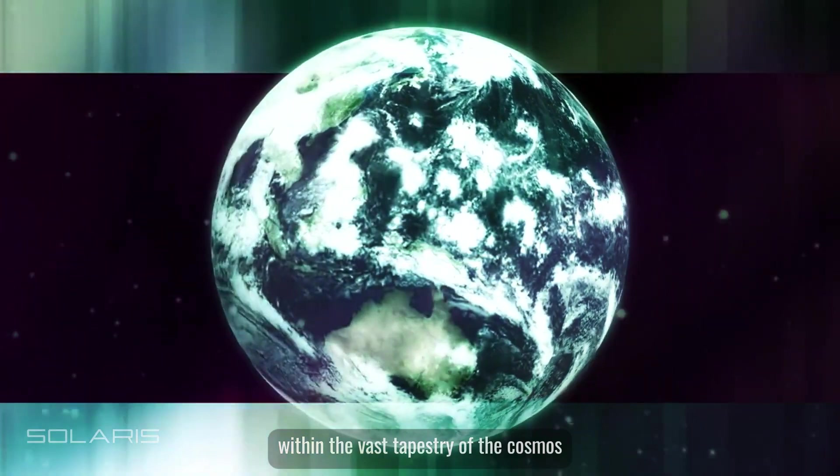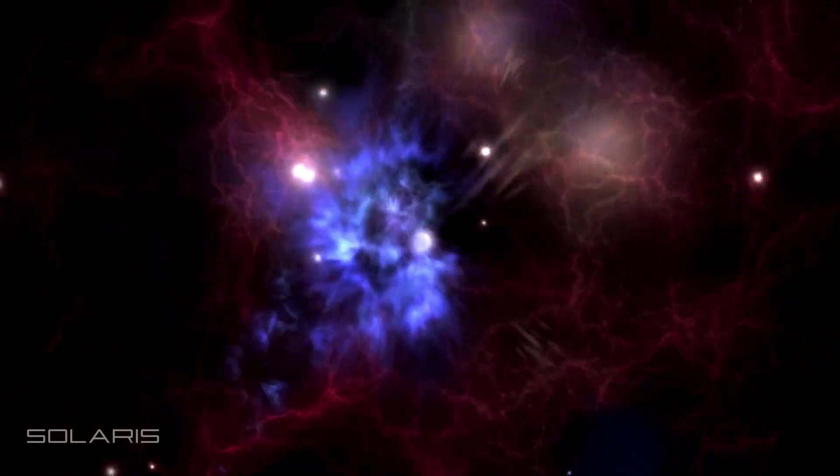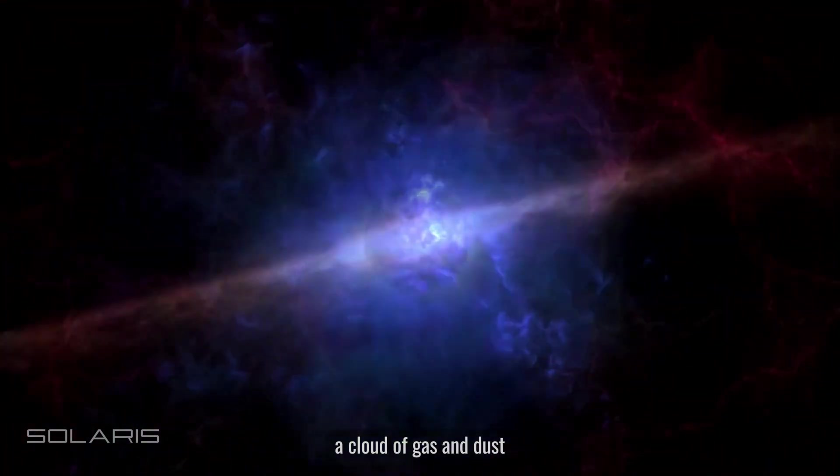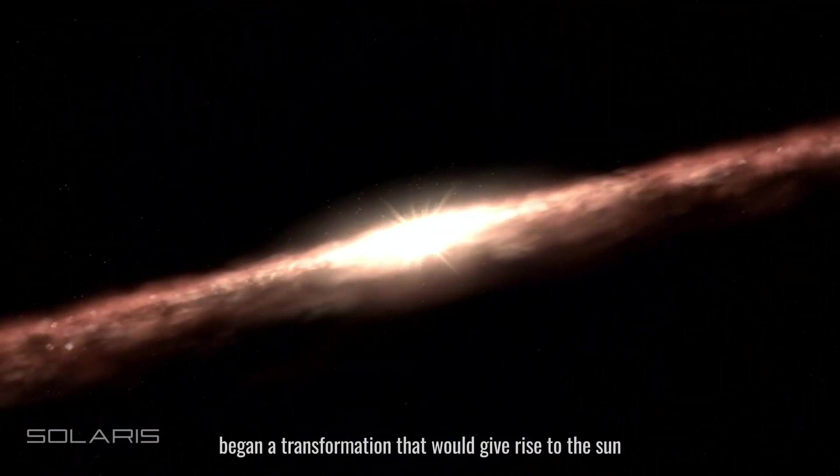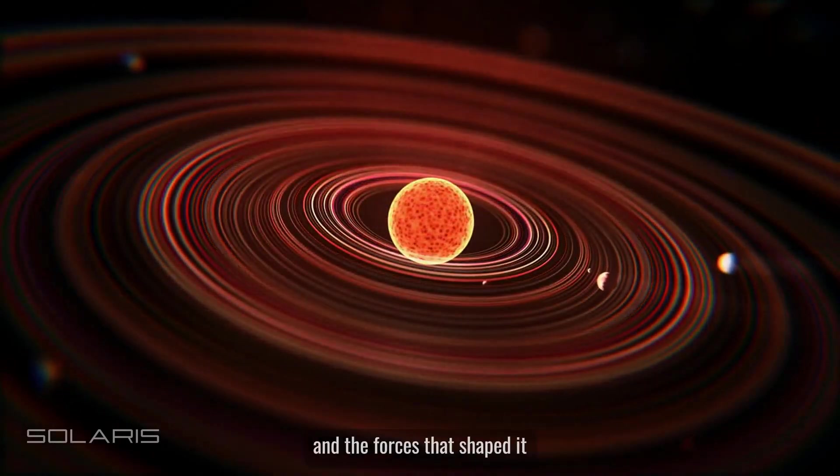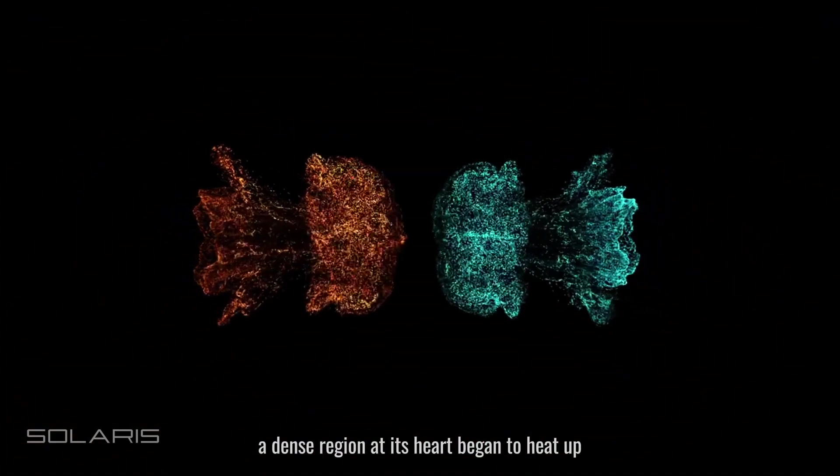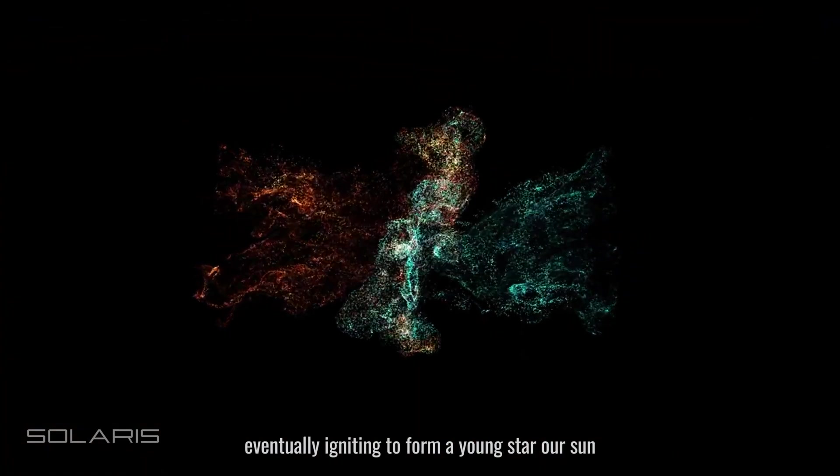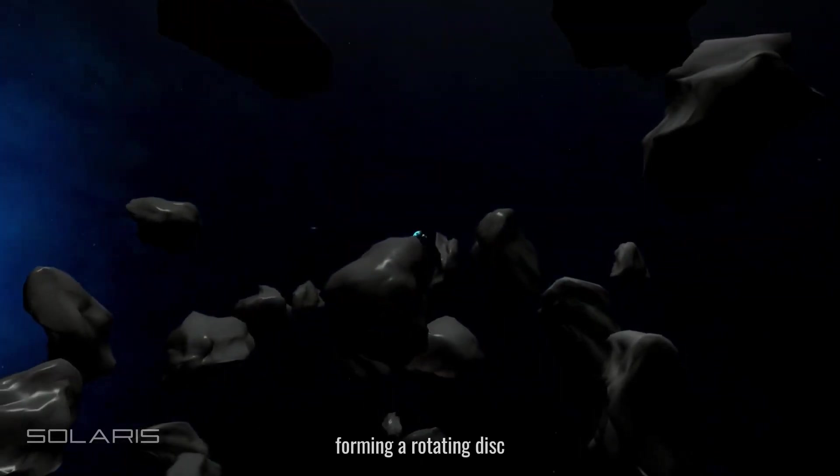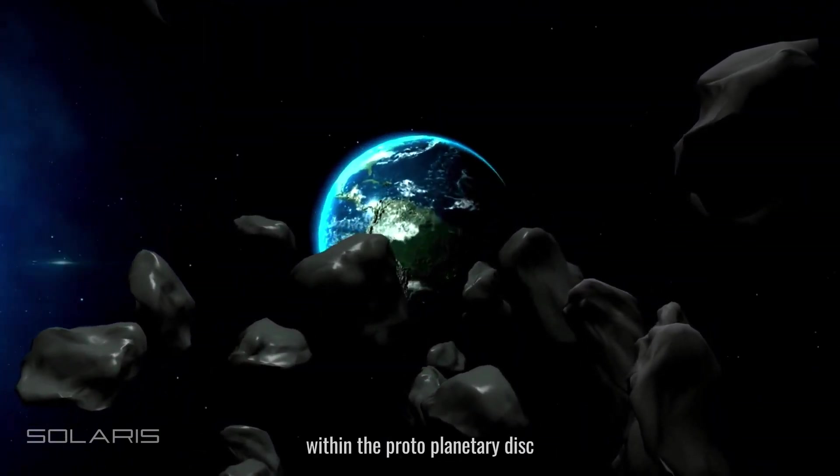Within the vast tapestry of the cosmos, a story of creation unfolds closer to home: the birth of our solar system. Some 4.6 billion years ago, in a quiet corner of the Milky Way galaxy, a cloud of gas and dust began a transformation that would give rise to the sun, the planets, and everything on them. As gravity pulled the cloud inward, a dense region at its heart began to heat up, eventually igniting to form a young star, our sun. Around this burgeoning star, the remaining material started to orbit, forming a rotating disk. Within this disk, the building blocks of the solar system were taking shape.